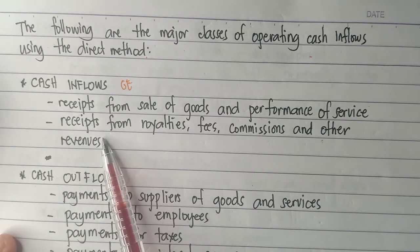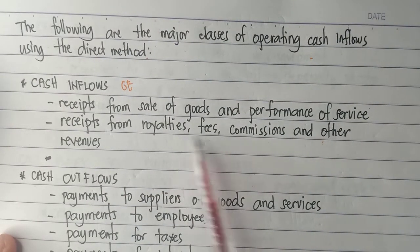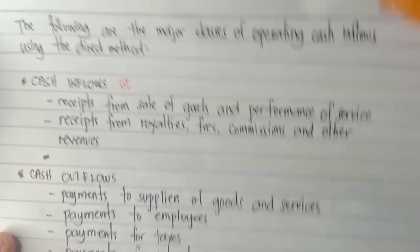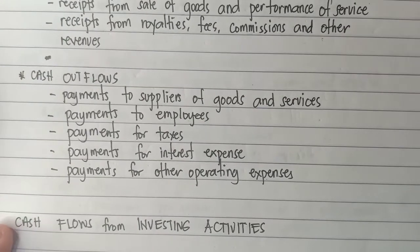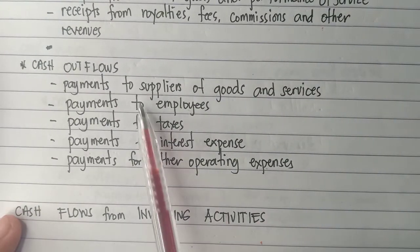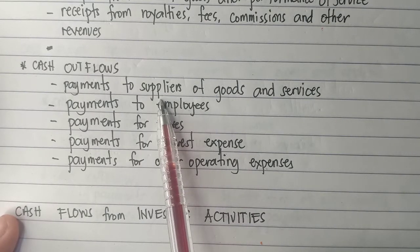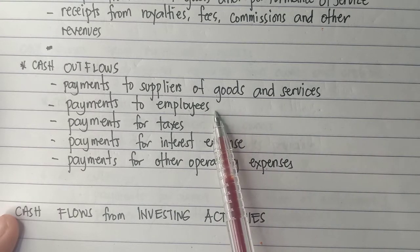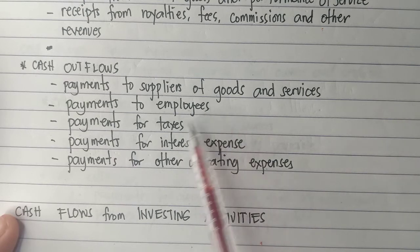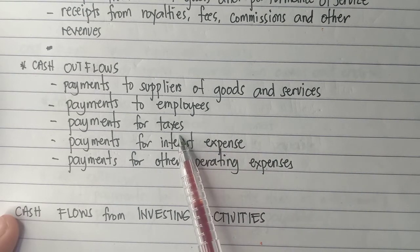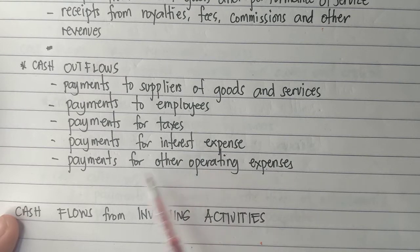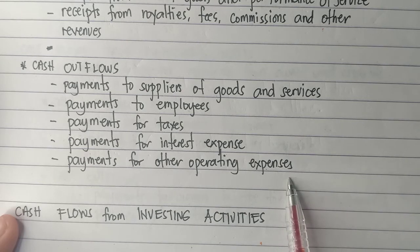Also included as cash inflows are all receipts from royalties, fees, commissions, and other revenues. For cash outflows under operating activities, we have payments to suppliers of goods and services, payments to employees such as salaries and commissions, payments for taxes, payments for interest expense, and payments for other operating expenses.